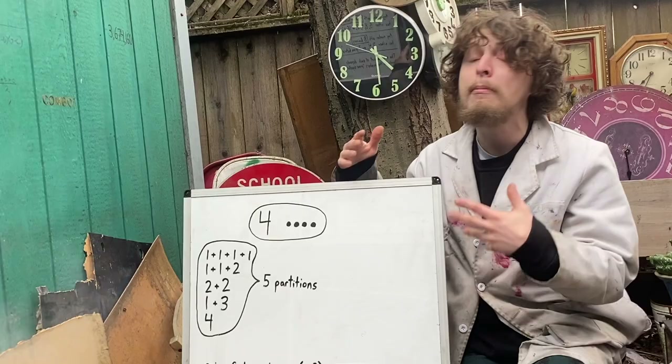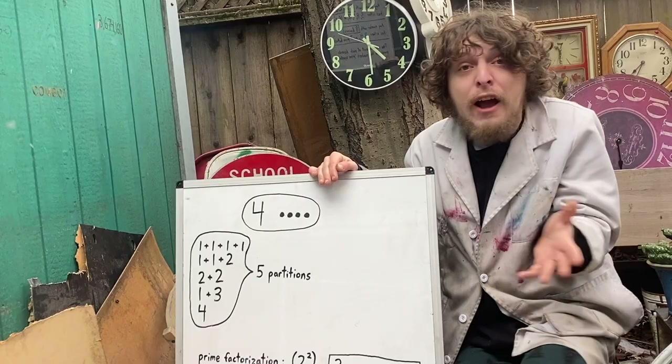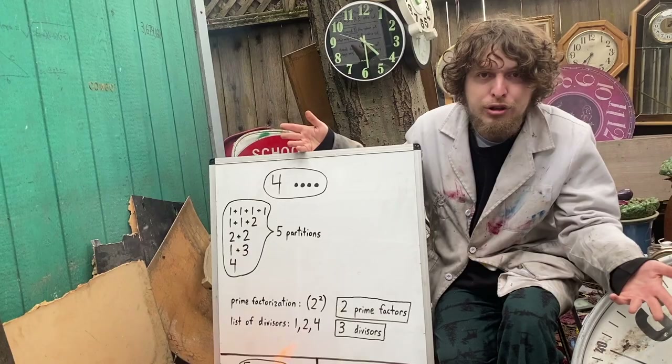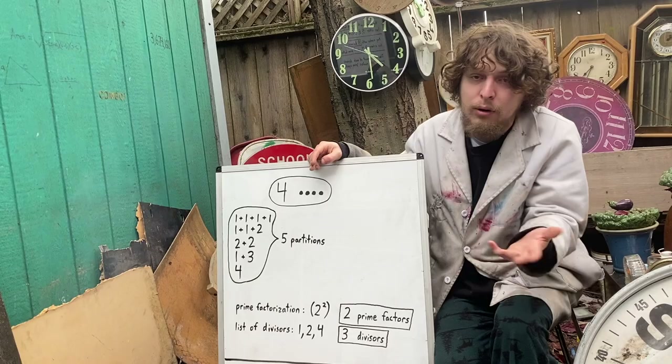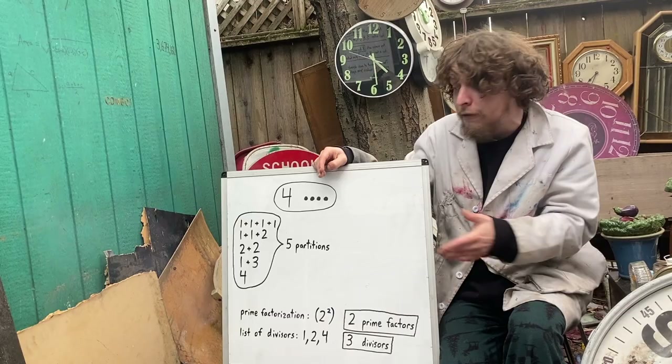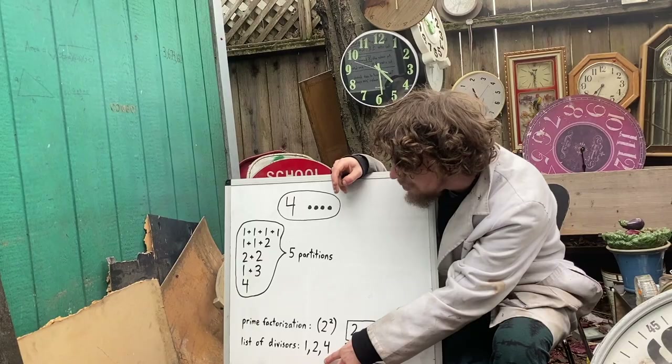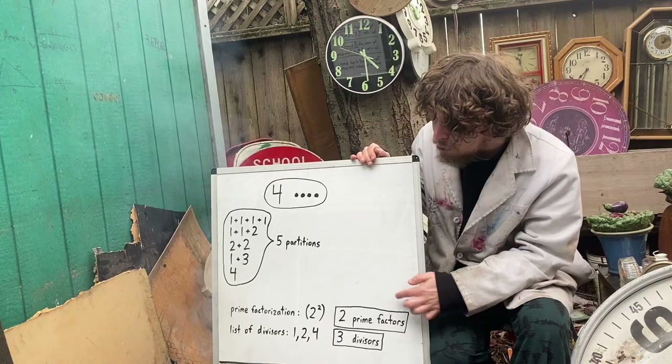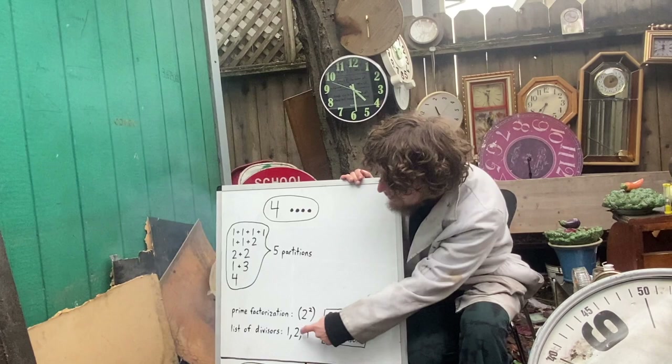But the main way we're going to be analyzing number structures today is how they can be made with multiplication. Because every integer like this has a unique prime factorization. In the case of four, that's two squared, or two times another two. It also has a unique list of total divisors that could divide it without a remainder — in the case of four, one, two, and four. Those are also known as the factors of the number, but to be clearer between prime factorization and the total list, I'll call them divisors today. So for four, we had a total of two prime factors, if you count the two twice, and three divisors.